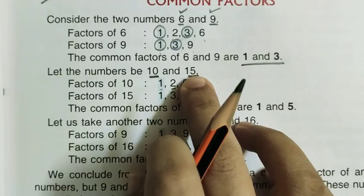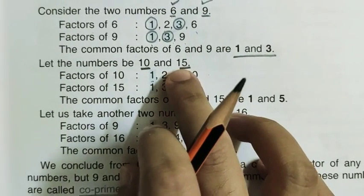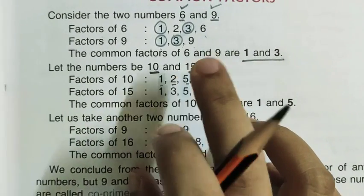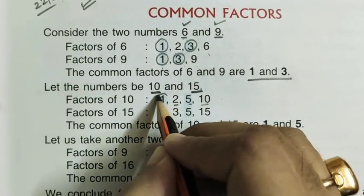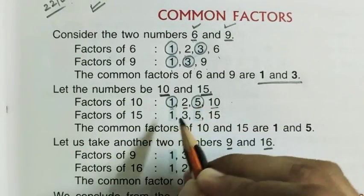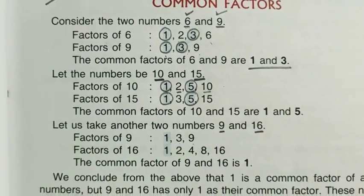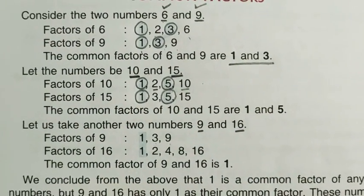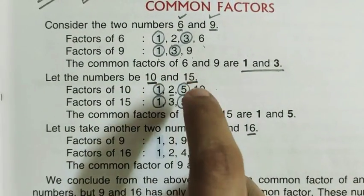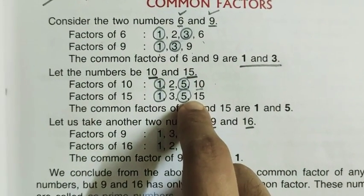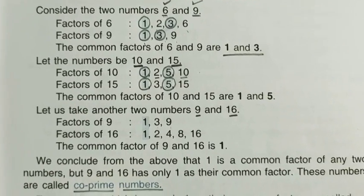Now come to 15. Which numbers divide 15? They are 1, 3, 5, and 15. So look at here — there are two common factors of 10 and 15, and those are 1 and 5. So 1 and 5 are the two common factors.